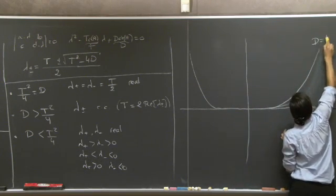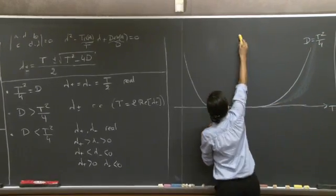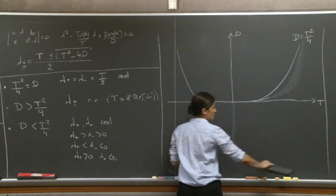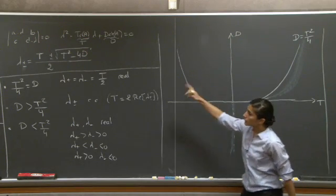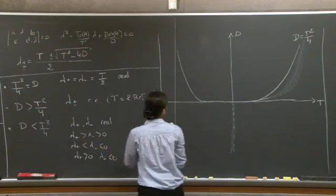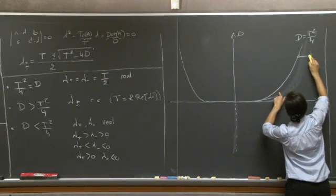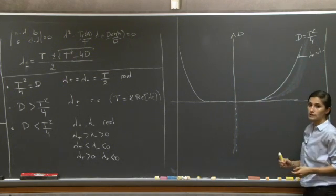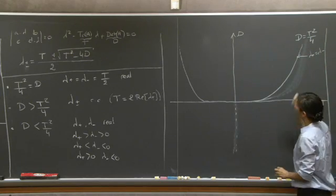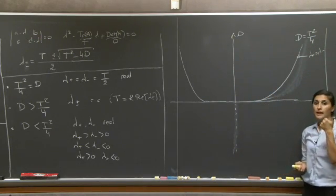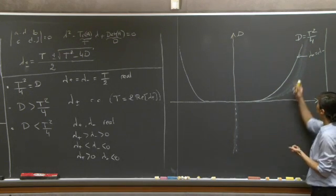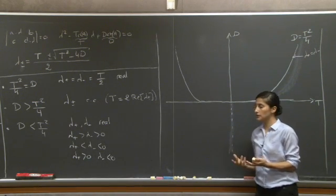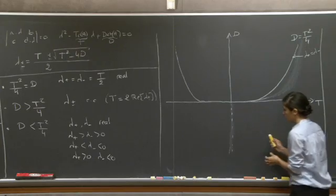The parabola in the trace-determinant diagram is given by d = t²/4. Points on this parabola correspond to the case λ+ = λ−, i.e., repeated eigenvalues equal to t/2. If the trace is positive (right side of diagram), we have two positive repeated real eigenvalues. We can have a defective matrix with only one eigenvector, requiring a generalized eigenvector for the second solution.